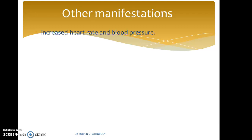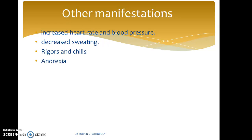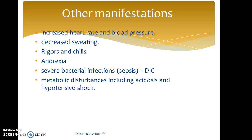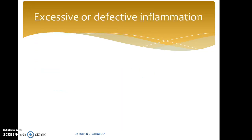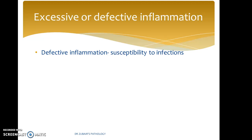Other manifestations include increased heart rate and blood pressure, decreased sweating, rigors and chills, and anorexia or loss of appetite. Severe bacterial infections can cause sepsis and DIC — disseminated intravascular coagulation — along with metabolic disturbances including acidosis and hypotensive shock. Defective inflammation leads to susceptibility to infection, while excessive inflammation leads to allergies.